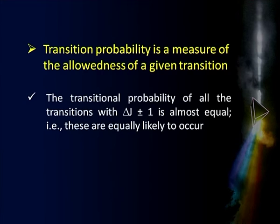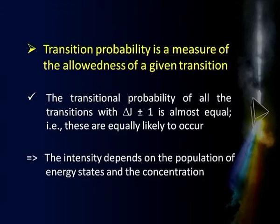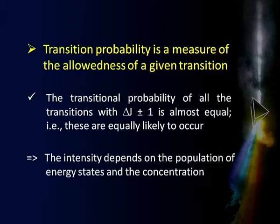It has been found theoretically that for rotational spectrum, the transition probability of all transitions where ΔJ = ±1 is almost equal. That means transitions from J=0 to 1, 1 to 2, 2 to 3, 3 to 4 — all are equally likely. So in terms of transition probability all transitions are likely to be of the same intensity. Therefore we must consider the other two factors: the population of energy levels and the concentration of the molecules in the sample.